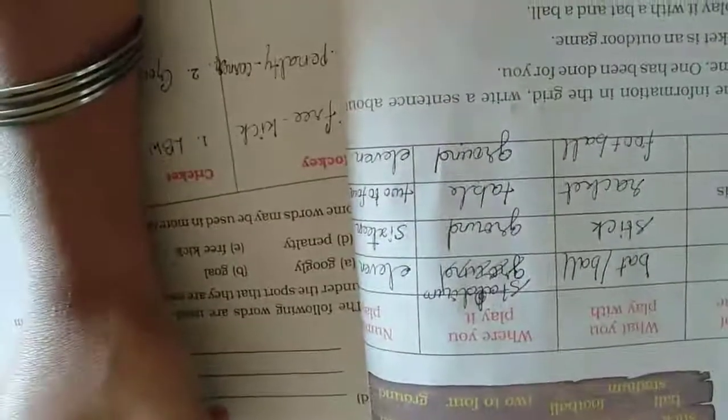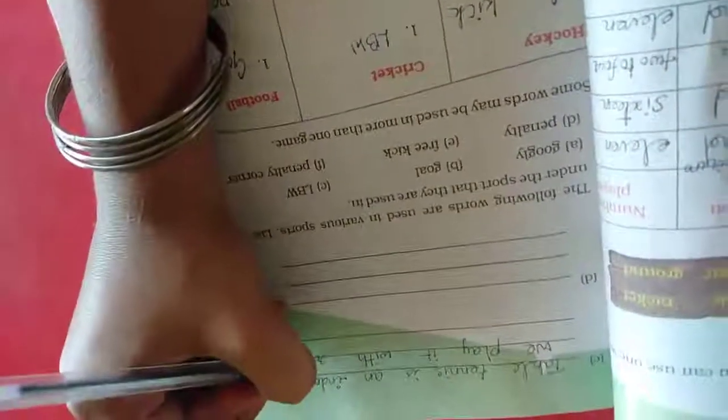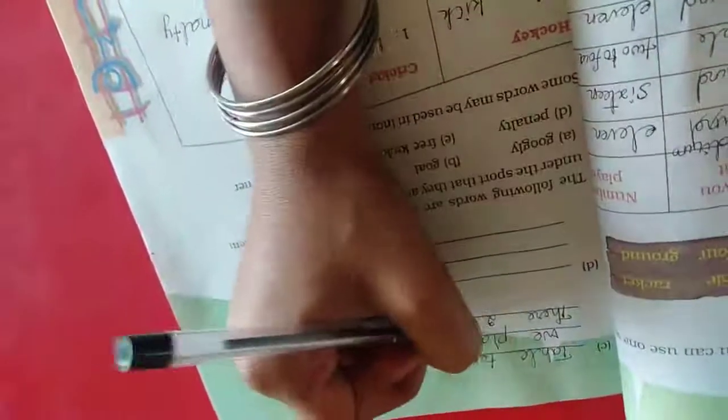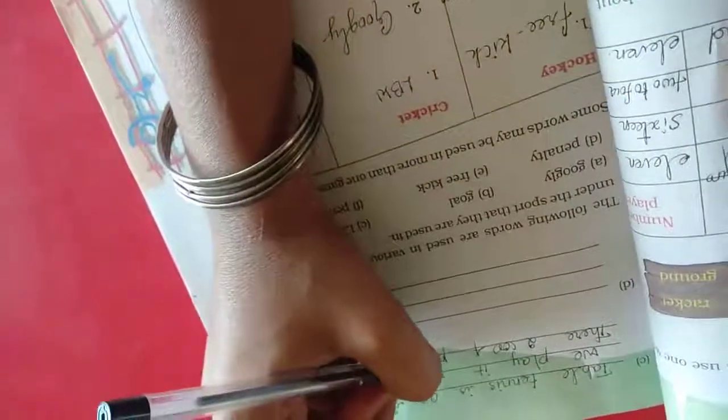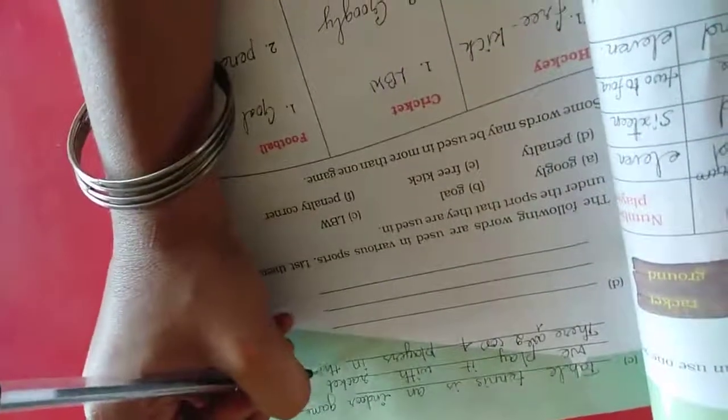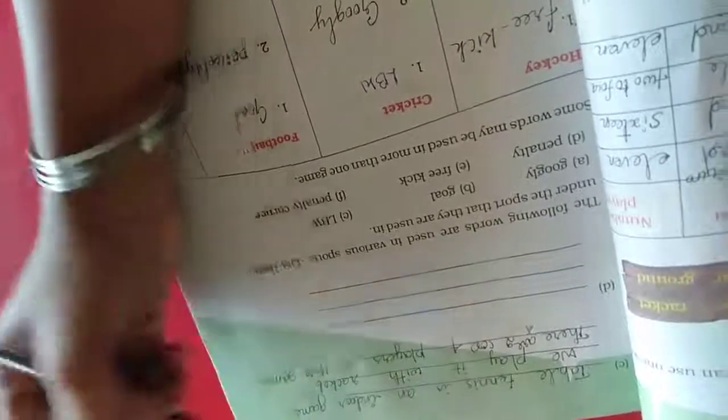Next, table tennis. Table tennis is an indoor game. We play it with racket. There are two or four players in this game.